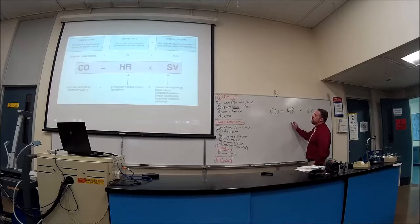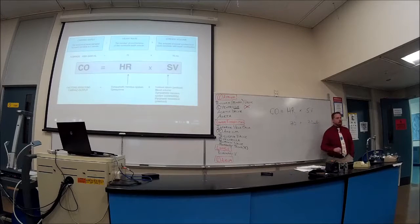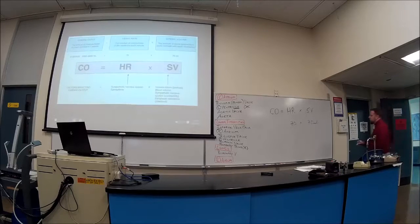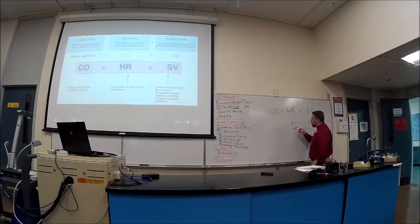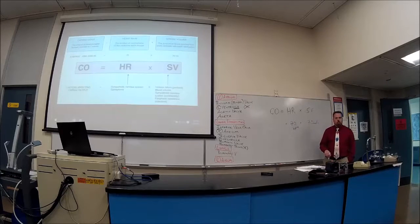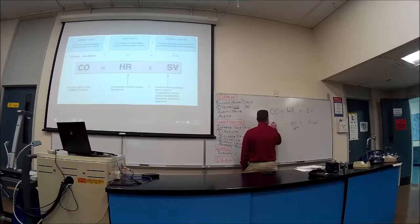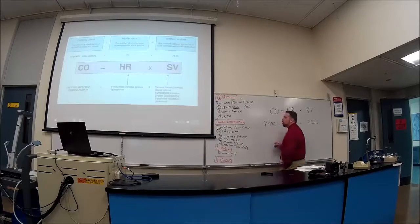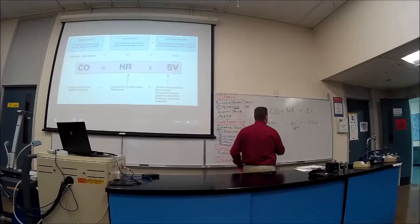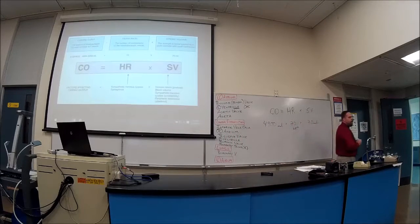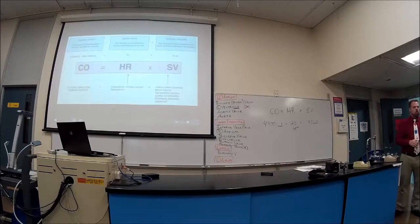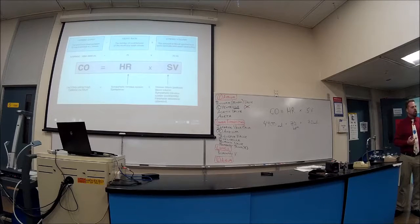In reality, the heart rate is more like 70, and the stroke volume is about 70 milliliters per contraction. So that's 70 beats per minute, which comes to about 4,900 milliliters - probably 5,000 milliliters, or 5 liters. In one minute, your heart pumps out 5 liters of blood.